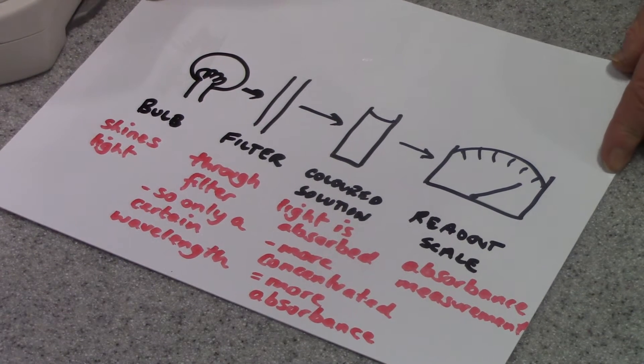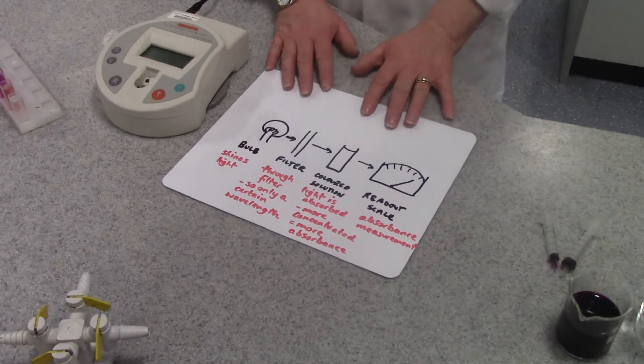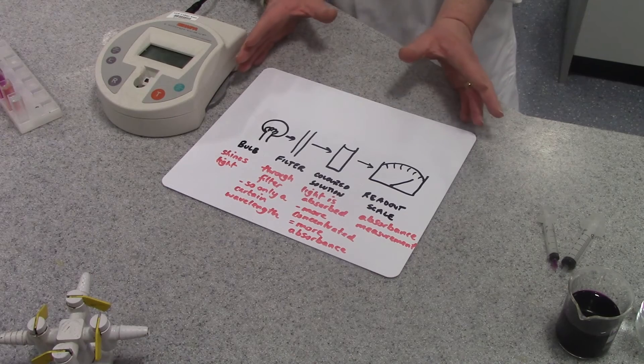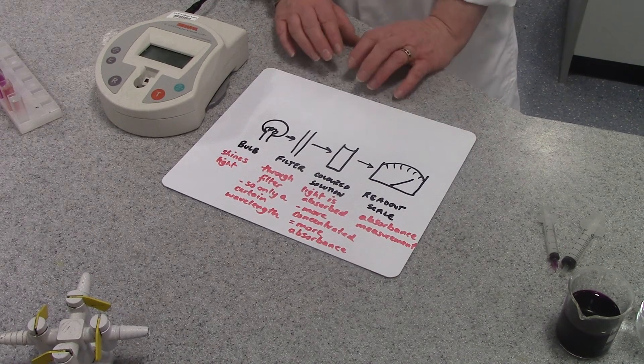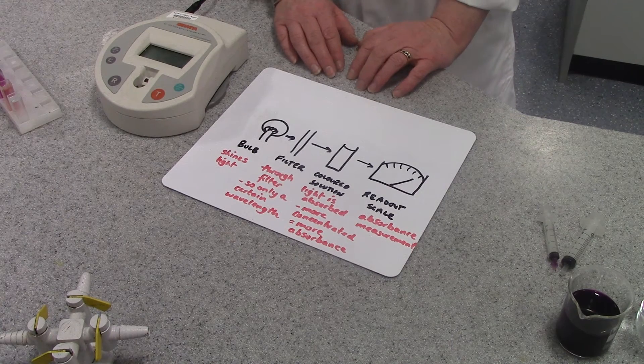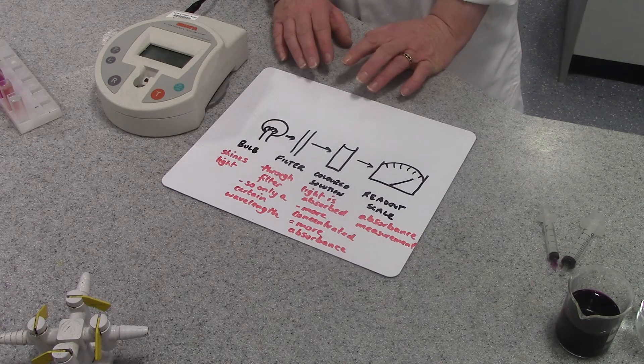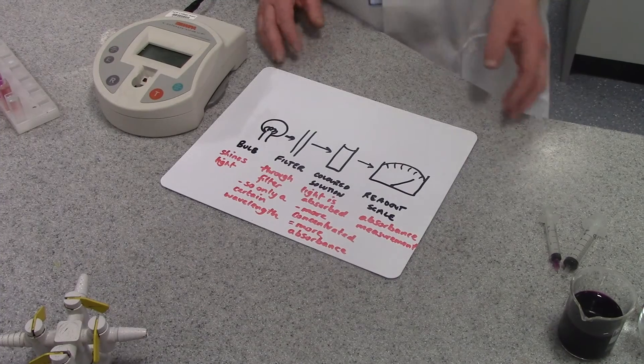When you're using a colorimeter, using it is quite easy. The only thing that is a bit tricky is that you need to prepare a calibration graph. A calibration graph is a way of converting the absorbance that you measure to a known concentration.